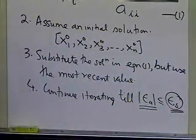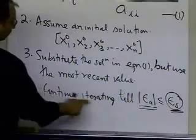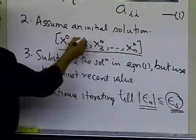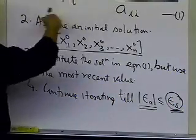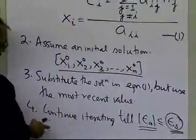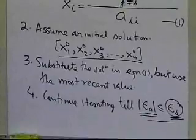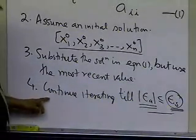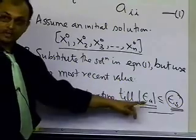Here we don't have only one output coming out — we have several outputs. We have to figure out how to handle this. Continuing iterating means that once we have found the full new guess — x1¹, x2¹, x3¹, all the way to xn¹ — we go back and continue the process. But we cannot continue forever, so we need a stopping criteria.